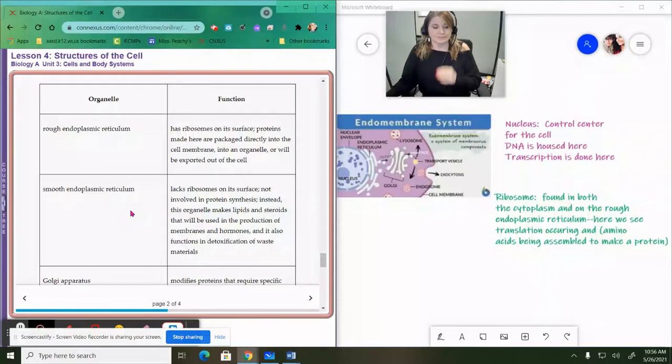Then we have our smooth endoplasmic reticulum and it just lacks the ribosomes. It's so it's smooth, has smooth appearance to it. Instead of doing protein synthesis, it actually makes lipids and steroids. So these are used in the production of membranes and hormones. And also functions in detoxification of waste materials. So it detoxes the waste materials so they're not poisonous when they're exported out of the cell. And it is used in the production of membranes and our production of steroids and lipids.